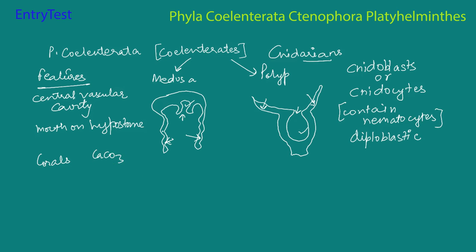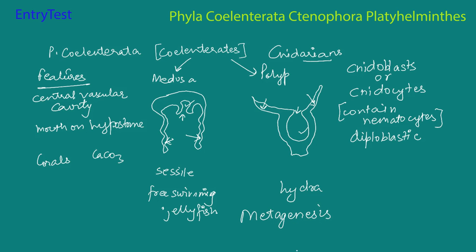Cnidarians usually exhibit two basic body forms. The first is the polyp: it is sessile, cylindrical, and stays fixed. The second is the medusa: umbrella-shaped and free swimming — an example is the jellyfish. An example of a polyp is Hydra or Adamsia. Some cnidarians can exist in both medusa and polyp forms, alternating between generations in a process called metagenesis. Transition from medusa to polyp involves sexual reproduction, while transition from polyp to medusa involves asexual reproduction.